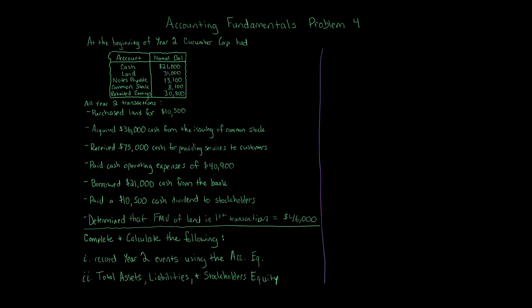We have the accounting equation: Assets = Liabilities + Equity. We're going to take the information from the beginning balances of Year 2, Cucumber Corp, and put this into the accounting equation because we have to start with our beginning balances — it's the second year of the business. We have Cash and Land, both assets: Cash has a balance of $21,000 and Land has a balance of $31,000. For liabilities, we have Notes Payable with a balance of $13,100.